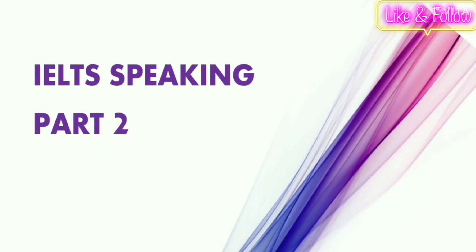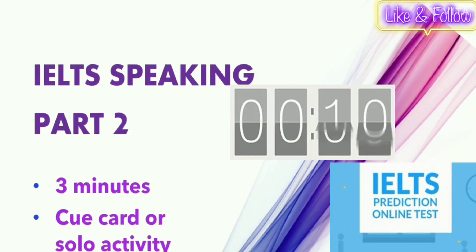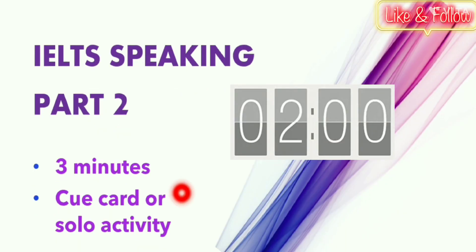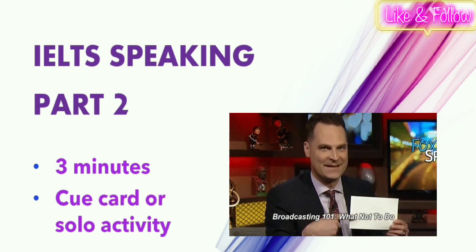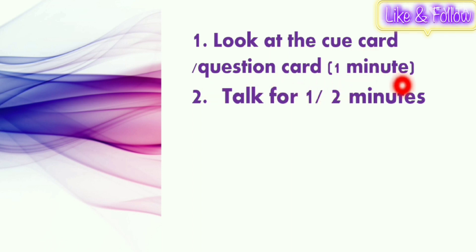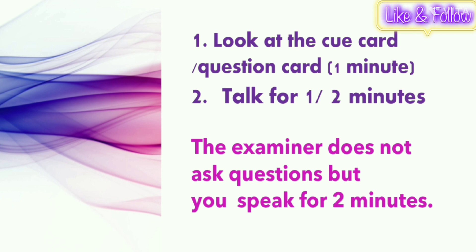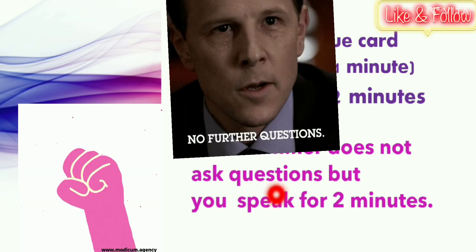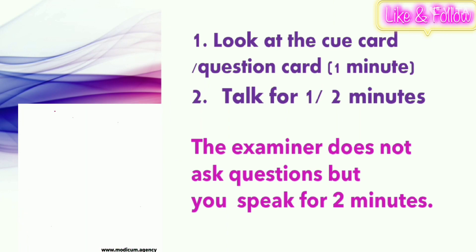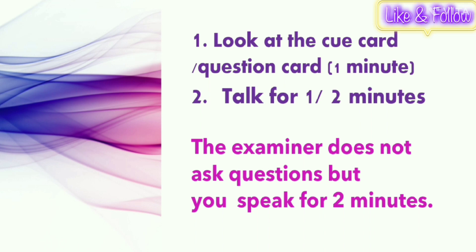Hello language learners, welcome back to my channel. In today's video we are discussing section 2 of IELTS speaking, which is Part 2. This section lasts for about 3 minutes. You have a cue card — a solo activity where you look at the question card for about 1 minute to prepare, then talk for about one to two minutes. The examiner does not ask questions. This section is considered the most difficult because talking for two minutes is quite difficult even for native speakers.